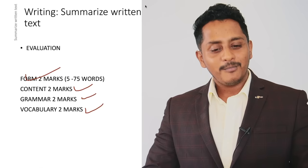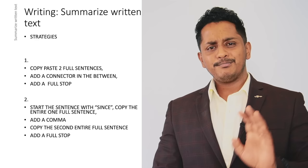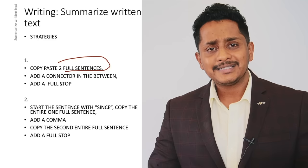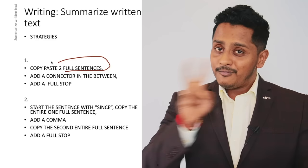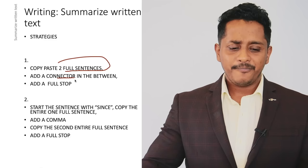Strategy number one — simple strategy. Copy and paste two full random sentences of your choice. It need not be logically correct. Don't think 'this is logically wrong' — the software will not know that. Any two random sentences, copy and paste. Full sentences — not half. Add a connector in between, like FANBOYS: for, and, nor, but, or, yet, so. Add 'and' in between, then add a full stop at the end. That's the first technique.